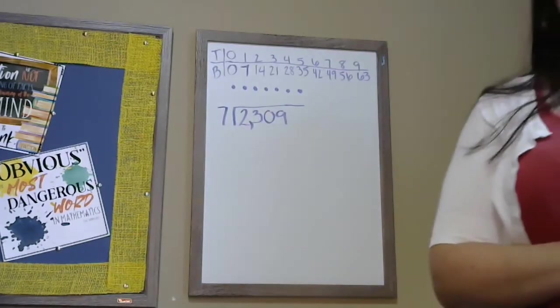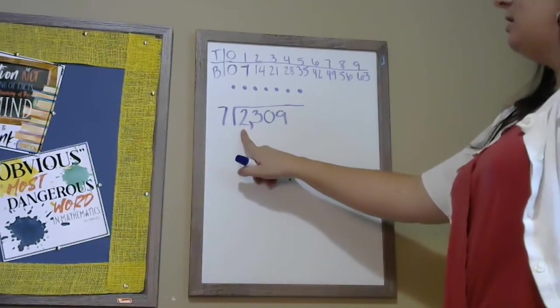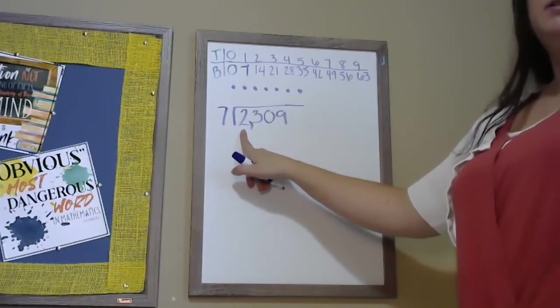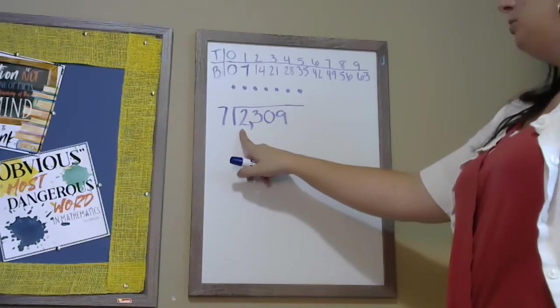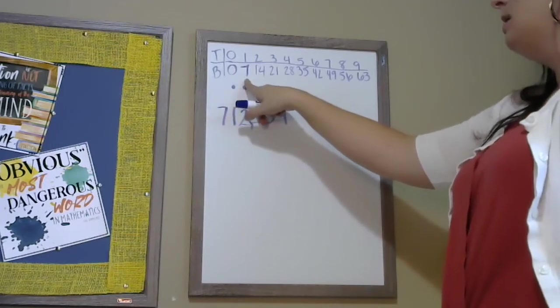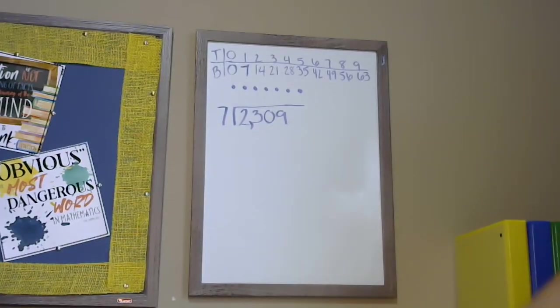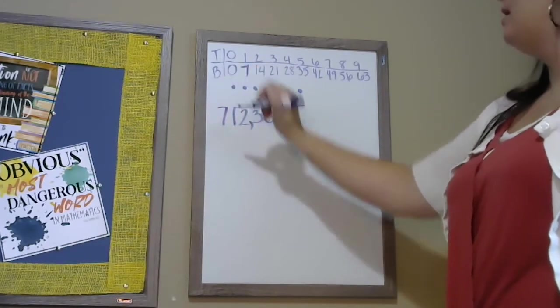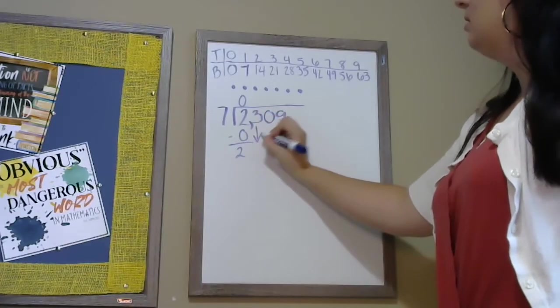Once you have your tops and bottoms chart prepared, these are the steps that you'll use to complete the algorithm. We look at the number that we are going to be dividing. But instead of thinking about division, we're going to be thinking about subtraction. Which of these numbers is the largest number that I can subtract from two and not get a negative value? Well I can subtract zero, but as soon as I get to seven, our first number, two minus seven would give me a negative number. So I'm not going to use seven, I'm going to use zero. So I say my top is zero, my bottom is zero. Top, bottom, subtract, bring down.